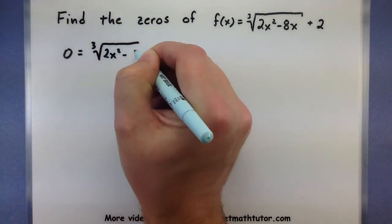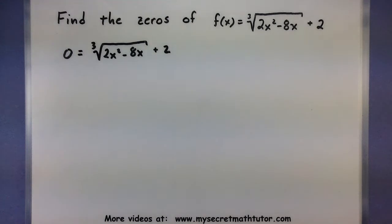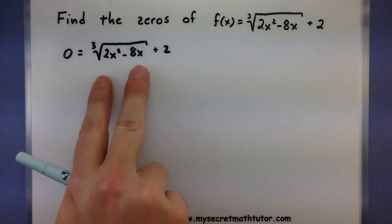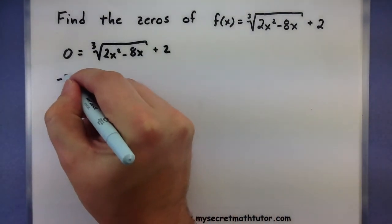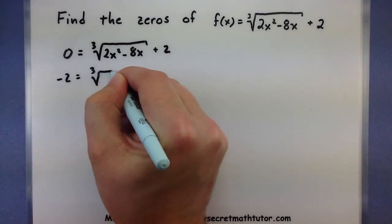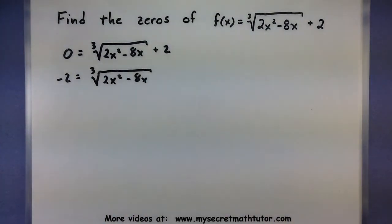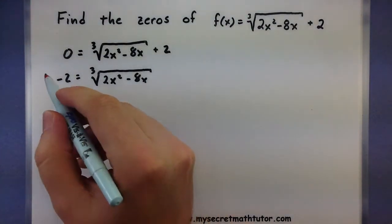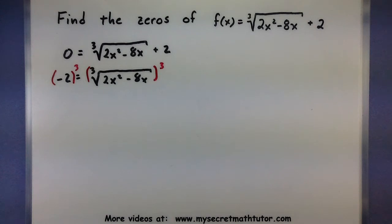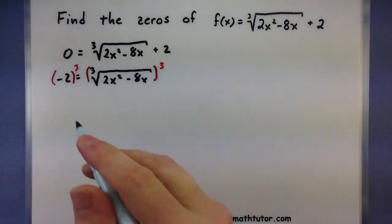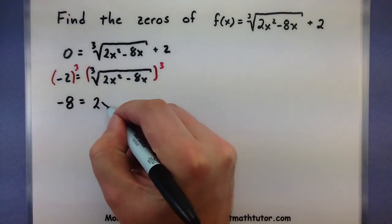So 2x squared minus 8x — all that's underneath the cubed root — plus 2, equals 0. To begin, we must isolate this cubed root, so this 2 must be moved to the other side. Let's subtract the 2, leaving the cubed root of 2x squared minus 8x equals negative 2. Now that the root is isolated, let's raise both sides to the power of 3. Negative 2 cubed gives me negative 8. Cubing a cubed root, now it's gone.